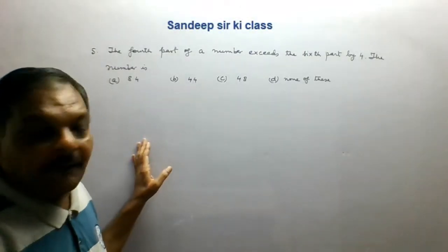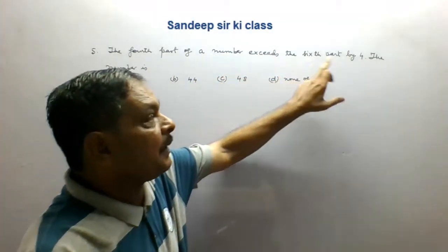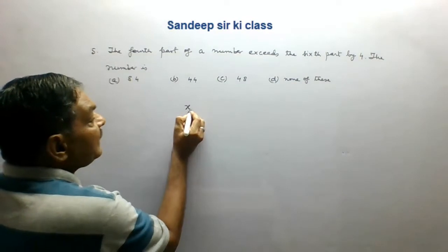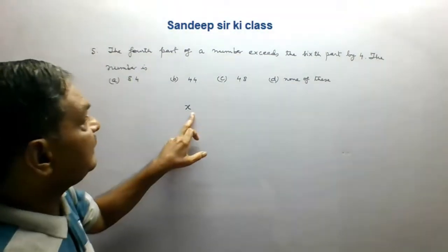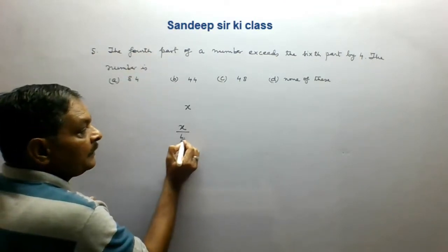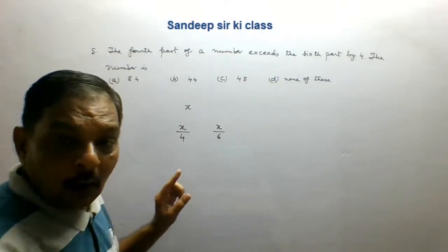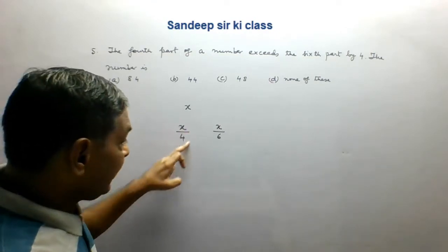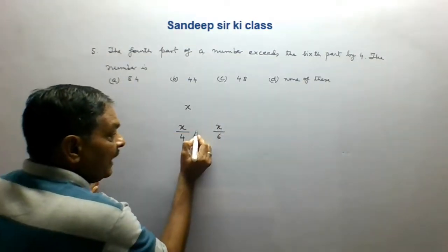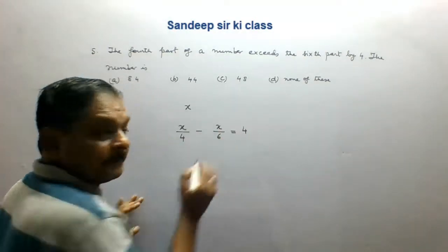Question number 5. The fourth part of a number exceeds the sixth part by 4. The number is — options are given. Let us say the number is X. The fourth part of the number is X/4, and the sixth part is X/6. According to the question, X/4 minus X/6 equals 4. This is the equation.